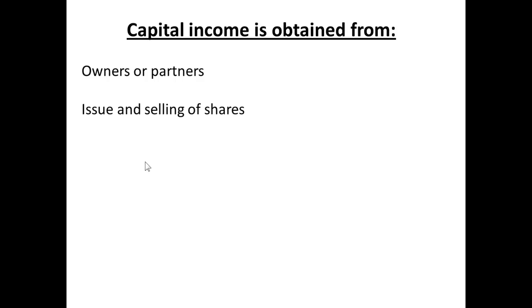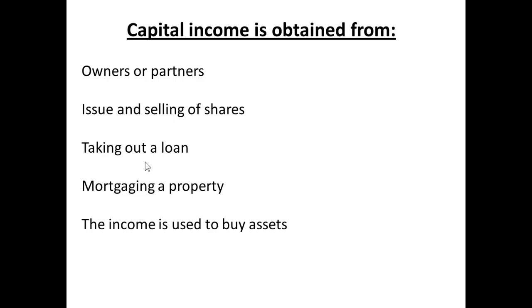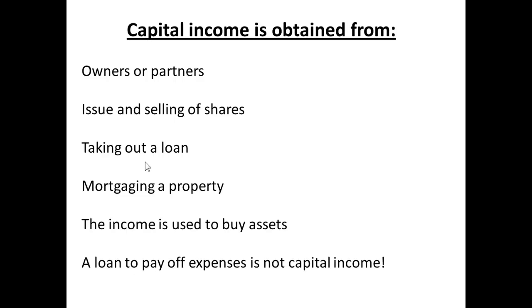So where do we get our capital income from? It can come from owners or partners, from the issuing of shares if we are a company, from taking out a loan, or by mortgaging a property, which can often yield additional capital. The capital income is then used to buy the assets. Note that if you take out a loan just to pay off expenses, that is not capital income — and in fact you might be lucky to find a bank willing to lend money for that purpose.